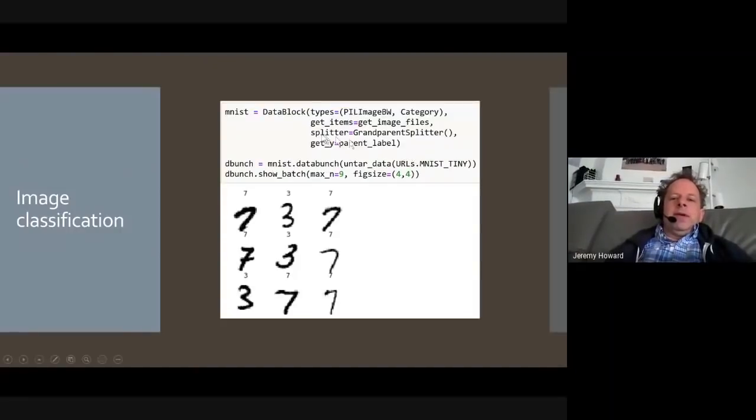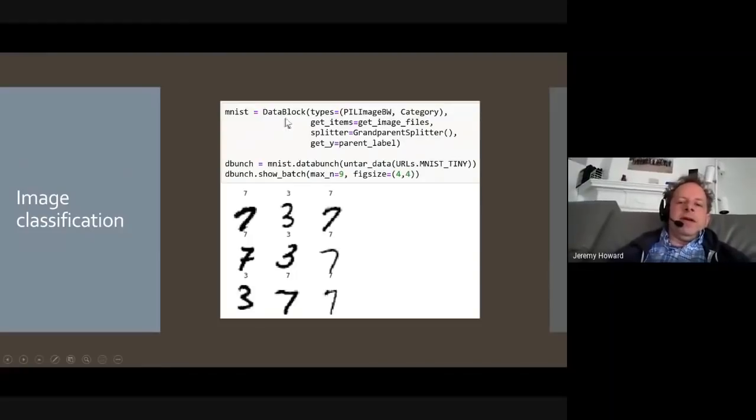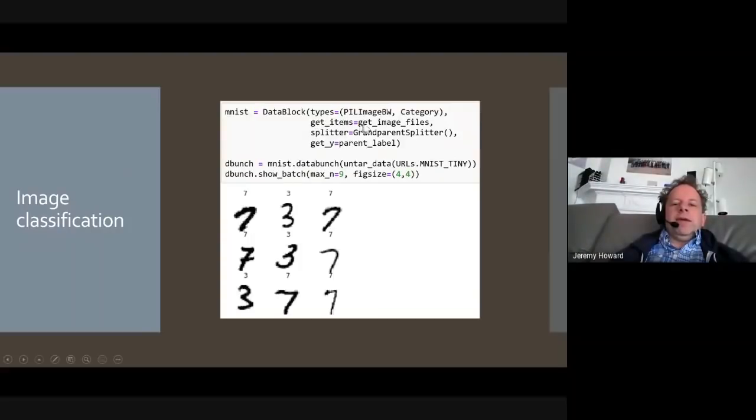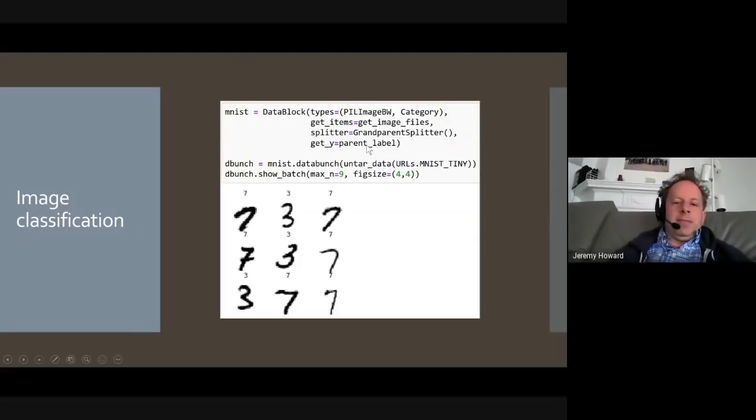So it needs to know what type of data do you have? How do you get that data? How do you split it into a training set and a validation set? And then put that all together into a data bunch, which is just a simple little class. It's literally, I think, four lines of code, which just has the validation set and the training set in one place. So with a data block, you just say, okay, my types, I want to create a black and white pillow image for my X and a category for my Y. And to get the list of files for those, I need to use this function. And to split those files into training and validation, use this function, which is looking at the grandparent path directory name. And to get the labels, use this function, which is use the parent's path name.